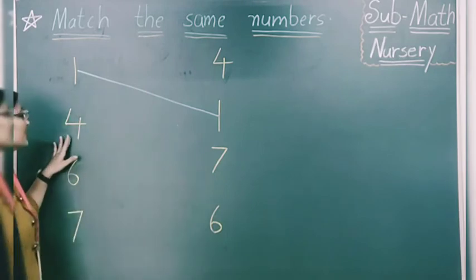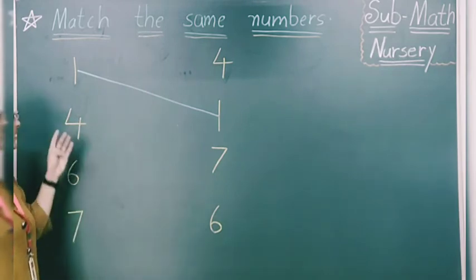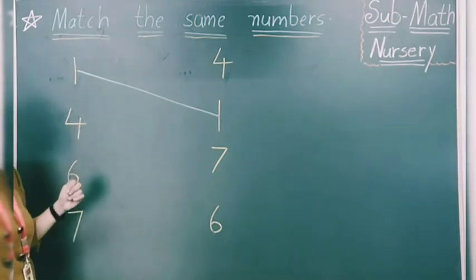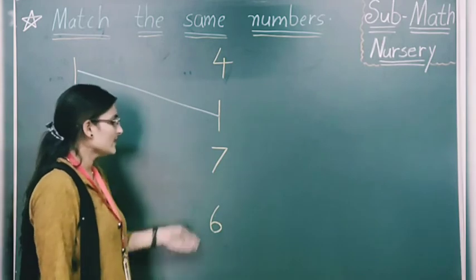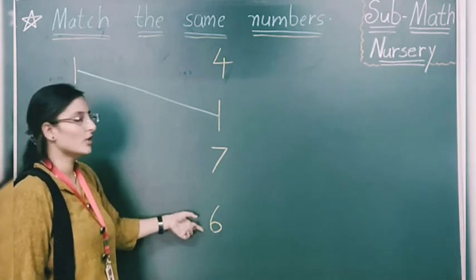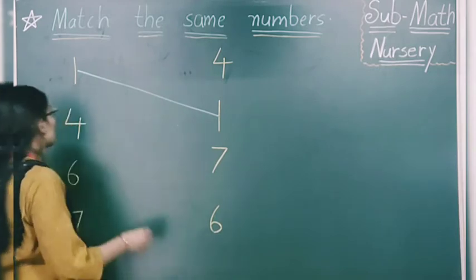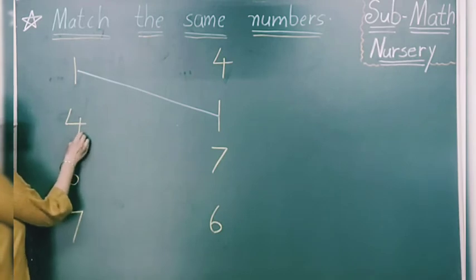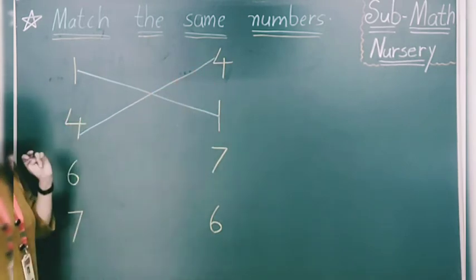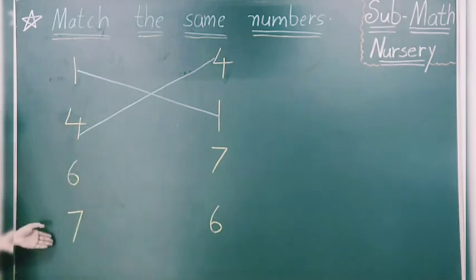Moving to the next number. Which number is this? Number 4. You have to find number 4 in this line. Is it 4? No. Is it number 4? Yes. So now you have to draw a line from here to there — number 4. We have completed 2. Like this, we have to complete these 4 numbers.